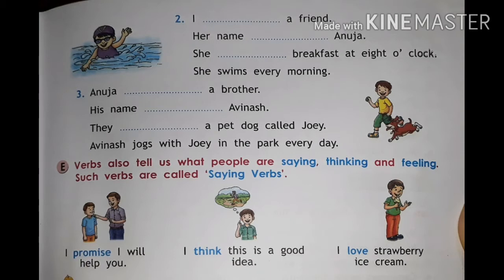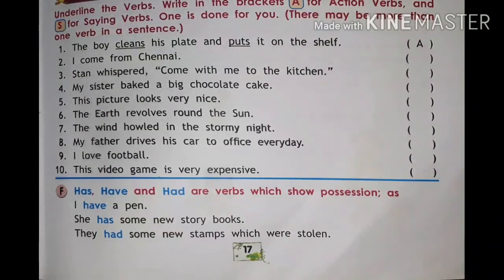Look at the pictures. The first one: 'I promise, I will help you.' Here 'promise' is the saying - the boy says that he will help you. Second picture: 'I think this is a good idea' - there is thinking. Third picture: 'I love strawberry ice cream' - 'love' is the feeling; the boy feels that he loves ice cream. So verbs express in three ways: saying, thinking, and feeling. These verbs are called saying verbs.